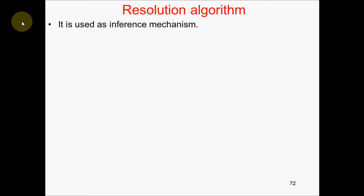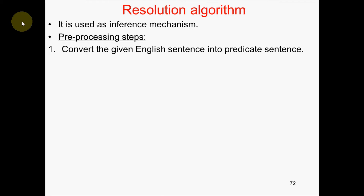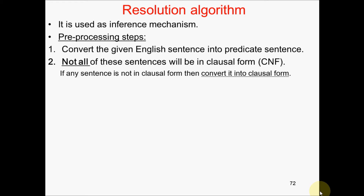Let us start. We already know that resolution is an inference mechanism. The preprocessing steps we had discussed in the last videos: the first one — convert the given English sentence into a predicate sentence. One by one, you have to take each sentence that comes for exam and convert it into a predicate sentence. The converted predicate sentence may not be in CNF or clausal form. So as part of the second step, if any sentence is not in clausal form, then you convert it into the clausal form, following the steps we had seen in the last video for converting a predicate sentence to CNF.